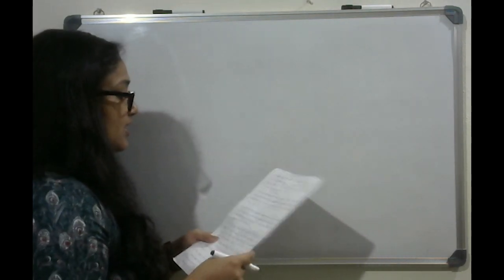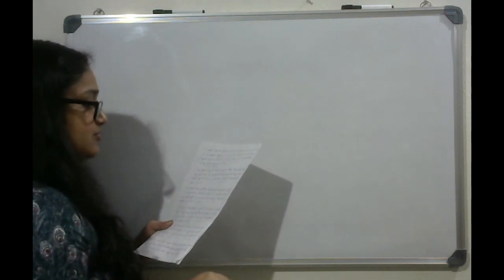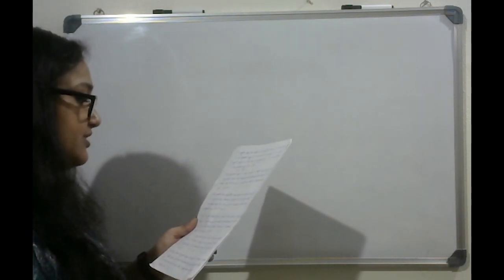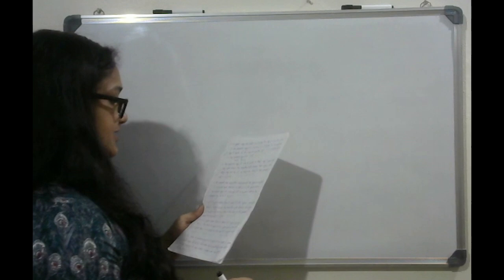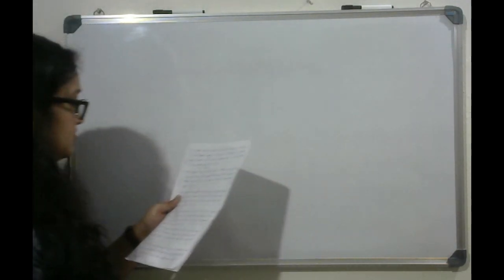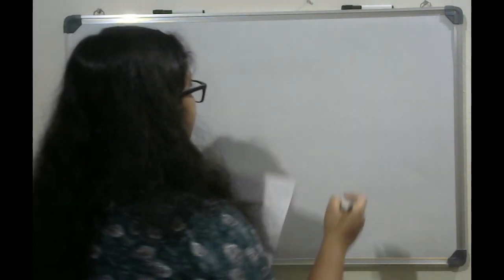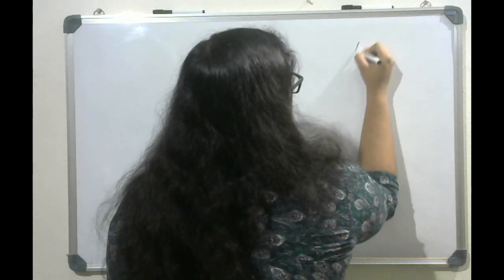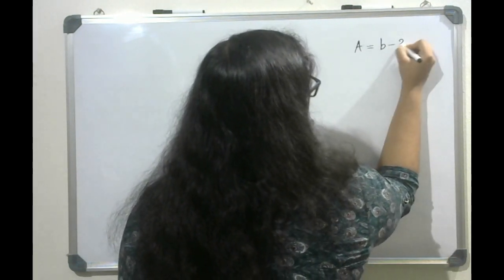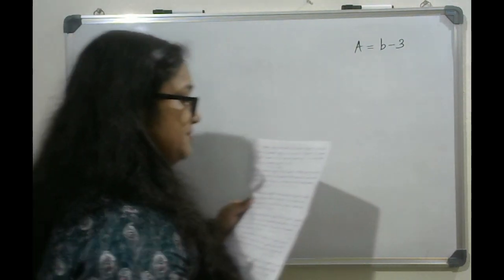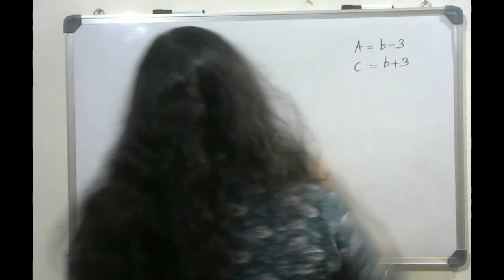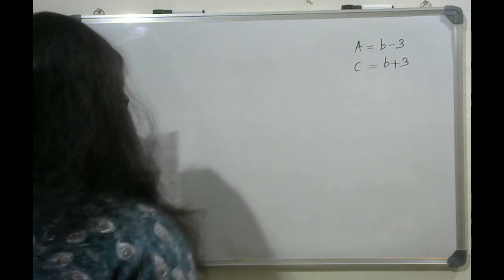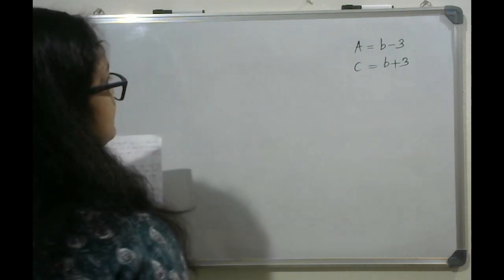Next question. B is 3 years older than A and B is also 3 years younger than C. 3 years hence, the respective ratio between the ages of A and C will be 4 is to 5. What is the sum of the present ages of A, B and C? Here, A and C values can be found with respect to B. It is given that B is 3 years older than A, and B is 3 years younger than C, which means C equals B plus 3.